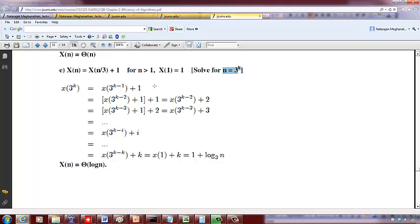So now I can use the same approach that we use for solving recurrences, like for factorial that we did earlier. So X(3^(k-1)) can be written as X(3^(k-2)) + 1. So just this part can be written as X(3^(k-2)) + 1, based on the same idea that we use here.